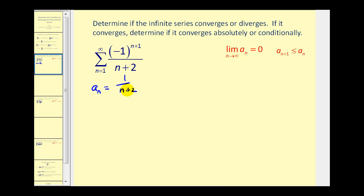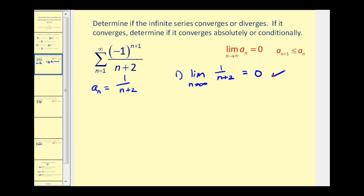Using the alternating series test, we'll start by taking the limit of this to make sure it's equal to zero. Our numerator is fixed and our denominator is increasing without bound, so this limit does equal zero. Now we need to make sure that a sub n plus one is always less than or equal to a sub n.